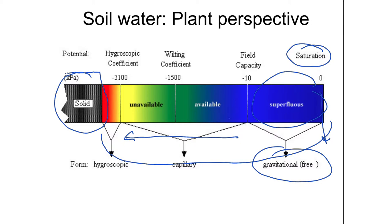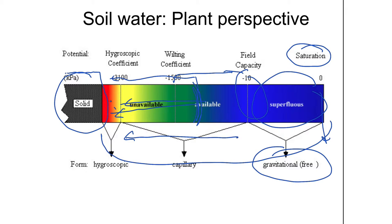But at some point, the attraction of the water molecules to the surface becomes stronger, and then you start having forces that are controlling the water movement in the soil. It's no longer just dripping, but it's adhering as films into the soil. Here's that happy median up between field capacity and above the wilting point. As the films become progressively thinner and thinner, the water is held by stronger and stronger forces.